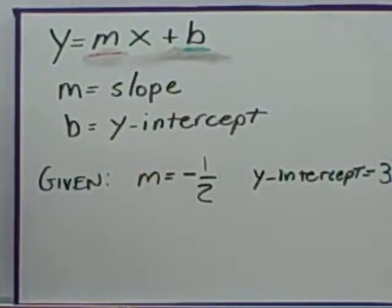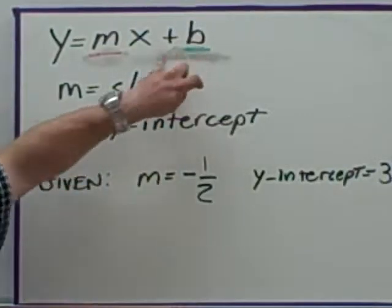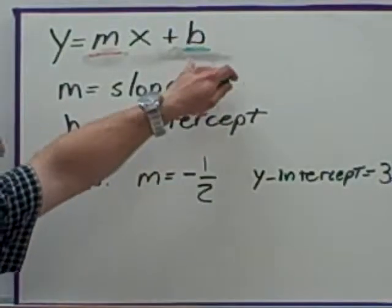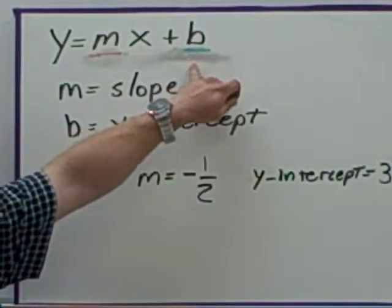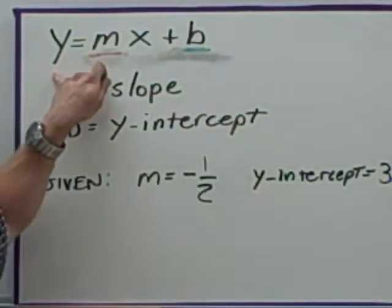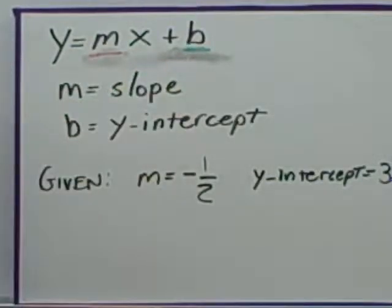Why they chose b for y-intercept, I'm not sure — you can look it up on the internet. But b stands for y-intercept and m stands for slope. It wouldn't make sense to use y for the slope since there's already a y in the equation; putting another y in would only make it confusing.